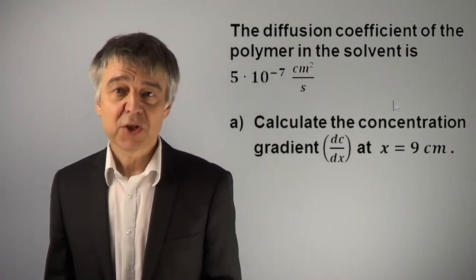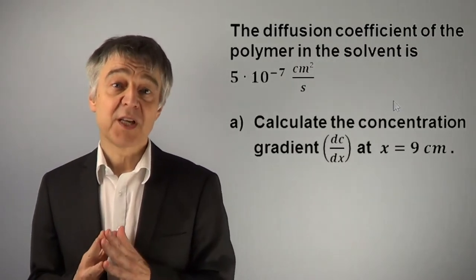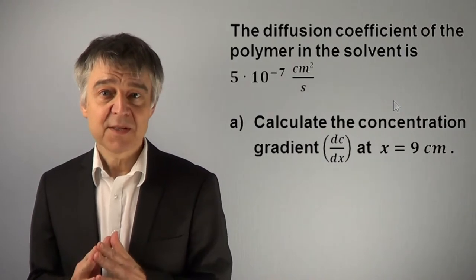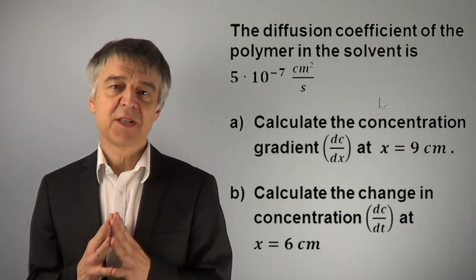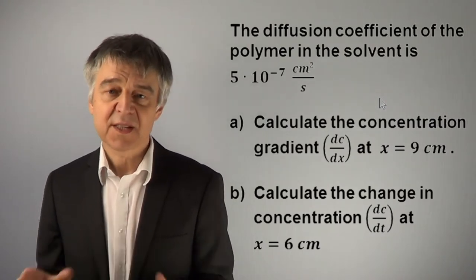Calculate the concentration gradient at the point x equals 9 cm and calculate the change in concentration at the point x equals 6 cm.